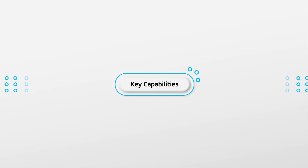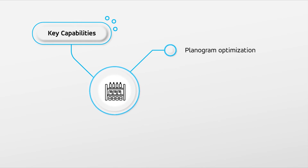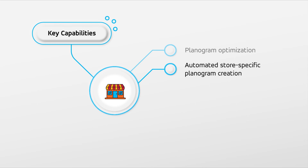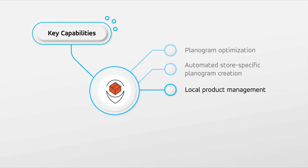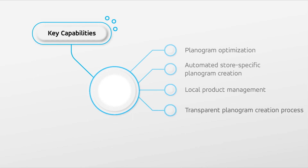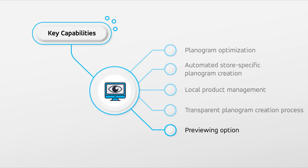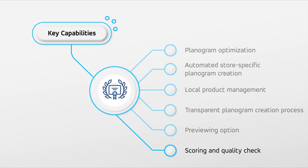Let's look at the key capabilities of Planogram Generator that define these business benefits. Planogram Generator performs planogram optimization based on merchandising rules, store-specific fixtures, product performance, and localized assortments. It facilitates automated store-specific planogram creation and manages local product assortments. It also provides a transparent planogram creation process, allows you to preview the planograms, and allows scoring and quality check of generated planograms.